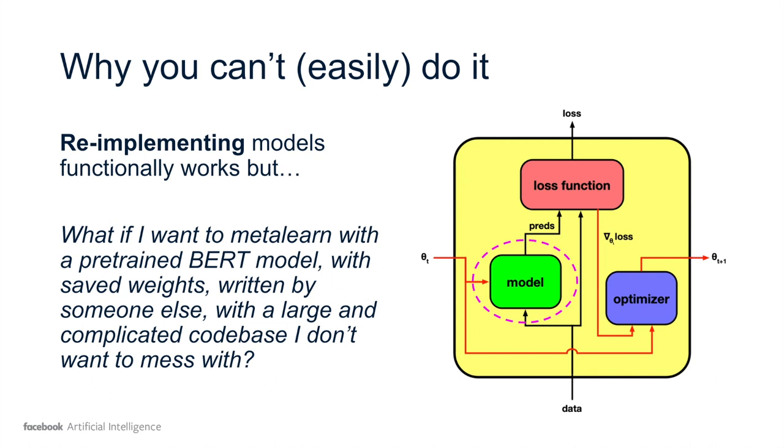Re-implementing models in this functional or stateless form works. That's what most people do when they experiment with things like MAML. But what if you want to meta-learn with a pre-trained BERT model from some external codebase that's complicated and you don't want to touch it? And you want to load a saved version of your model at the beginning of training to meta-learn with it, without messing with mapping parameters to the functional version, which can get quite complicated. In the current way of doing things, this is possible but extremely difficult. It involves a lot of engineering, and every time you change your model, you need to redo that from scratch.